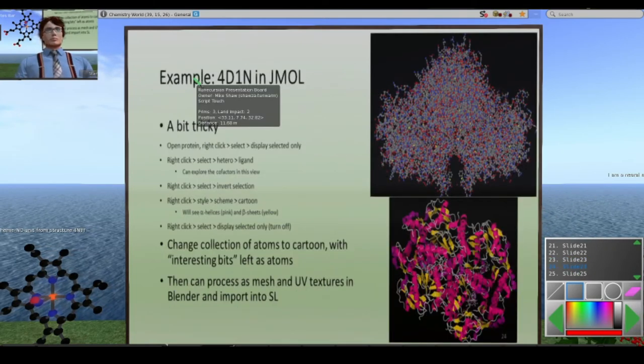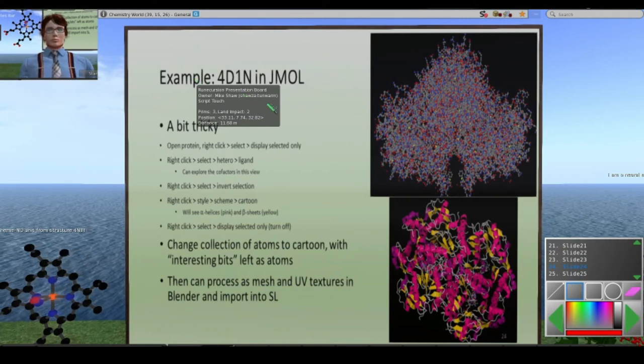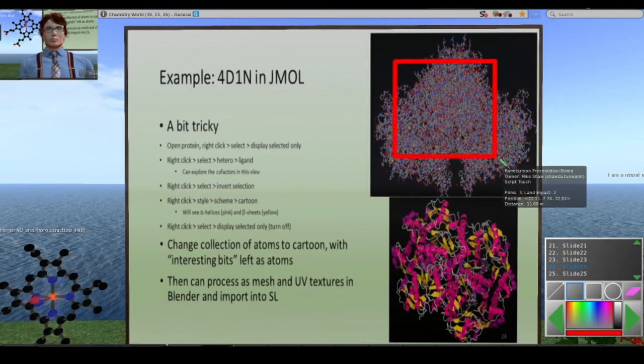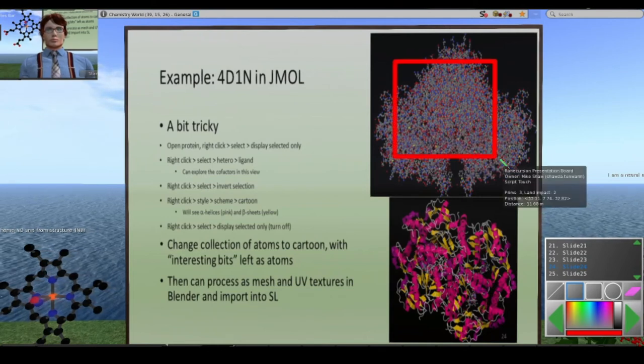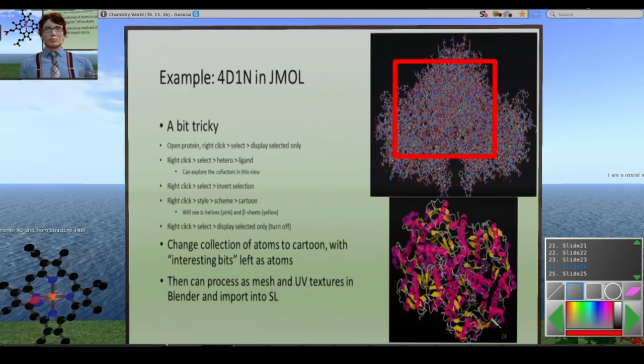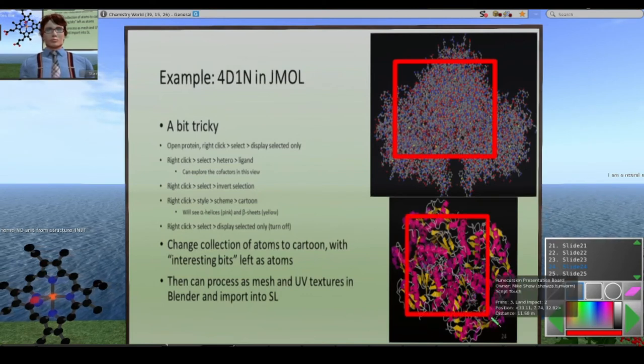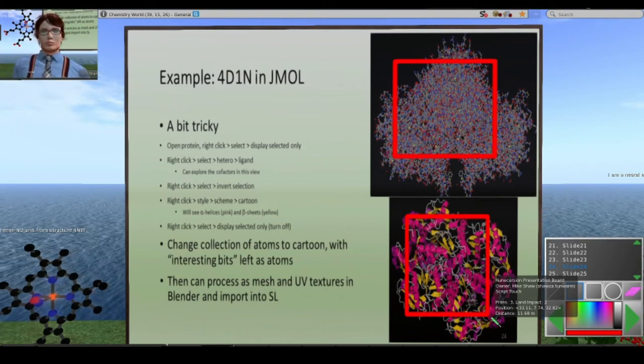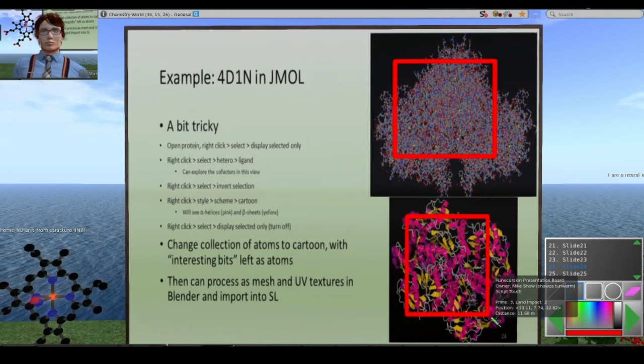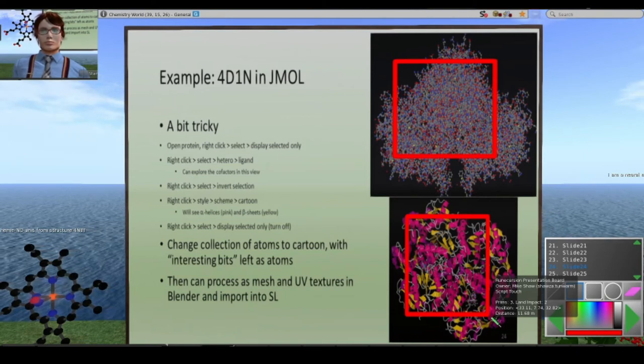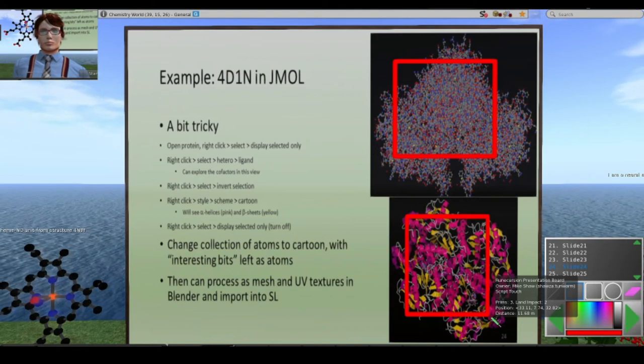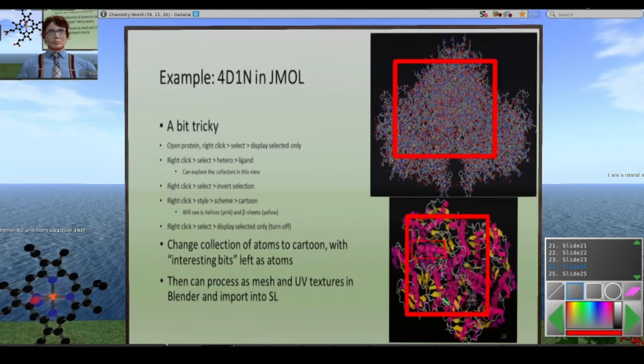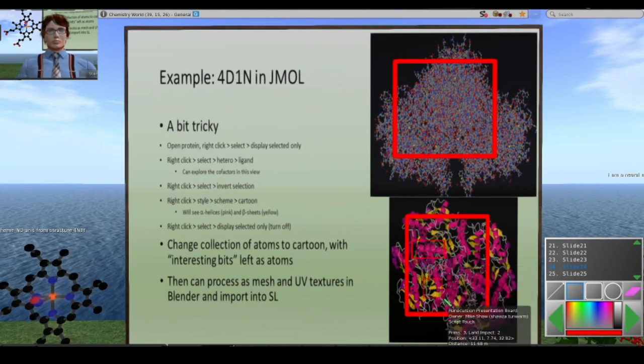Here's an example, the 4D1N, and that's a neuronal nitric oxide synthase. What you get when you just open it up in JMOL is where all the atoms are. After some clicking around and playing, you can get it to look like a nicer structure. The view of every atom in the structure is not really necessary, because if you represent some of the action happening in the structure by cartoons, then you can focus on what's really important.